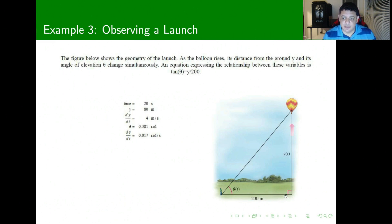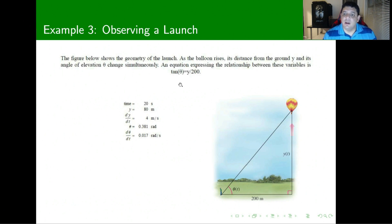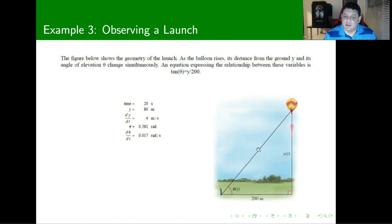This is a right triangle, and we can use opposite over adjacent, which gives us the tangent of theta. With this, we can find what the rate of change in elevation of the balloon is with respect to the observer.